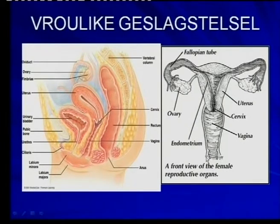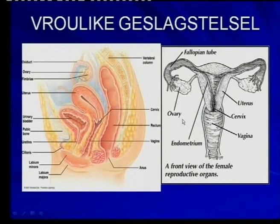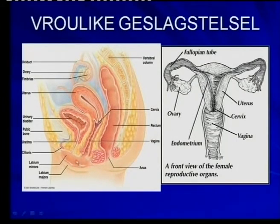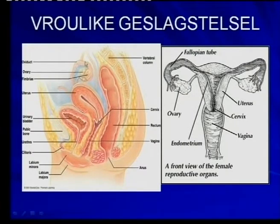You must remember these parts and also know the function of each one. On this sketch you have the basic parts of the female reproductive system that you must know. Here it shows you how it is located. The external part, which is called the vulva, there is the vagina, cervix, and the body of the uterus. Up there, the fallopian tube and the ovarium.